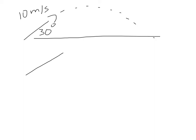We have our vector made up of a component along x and a component along y. Here we have the v0x component, the initial velocity along the x, and here we have the v0y component, the initial velocity along the y. Since we know the hypotenuse — 10 meters per second — and we know the angle — 30 degrees — we can use some trig to figure out v0x and v0y.